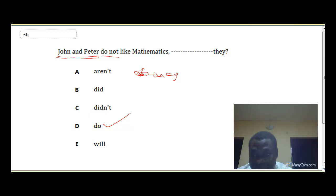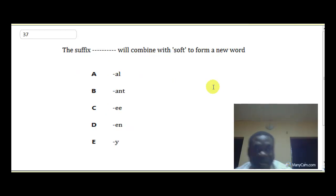Question 37: The suffix dash will combine with soft to form a new word. You know the suffix comes after the base word, while the prefix comes before the base word. So which word can come after soft to form a new word?